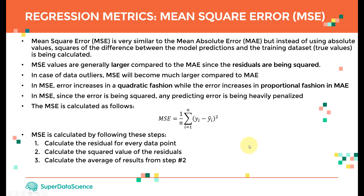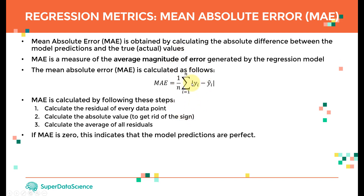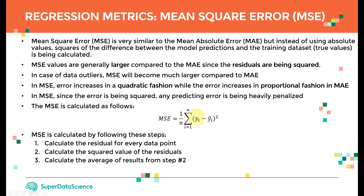The next metric is Mean Squared Error, or MSE. It's similar to MAE, but instead of taking the absolute value, we square the difference. MSE is: sum of (y_i − ŷ_i)² divided by N. MSE values are generally larger than MAE because we're squaring the residuals. In the case of data outliers, MSE becomes much larger — think of it as penalizing mistakes. Error in MSE grows in a quadratic fashion, while in MAE it grows proportionally.